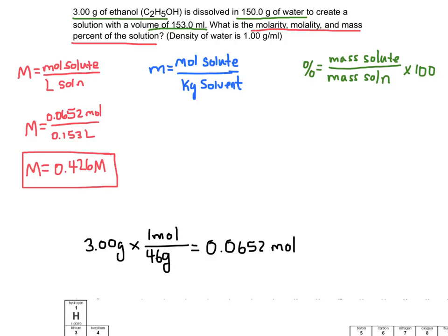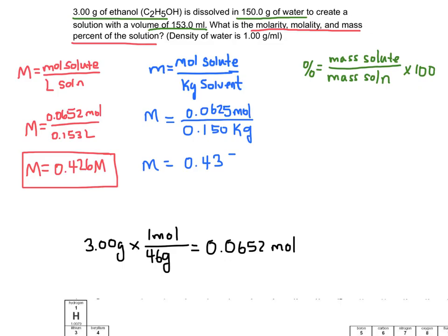Now let's solve for molality. We already found the moles of solute — 0.0652 moles — so we plug that in on top. Then we need the kilograms of solvent. Water is the solvent, and we're given 150 grams of water. Dividing by 1000 converts that to 0.150 kilograms. Plugging into the calculator gives a molality of 0.435 m (molal).